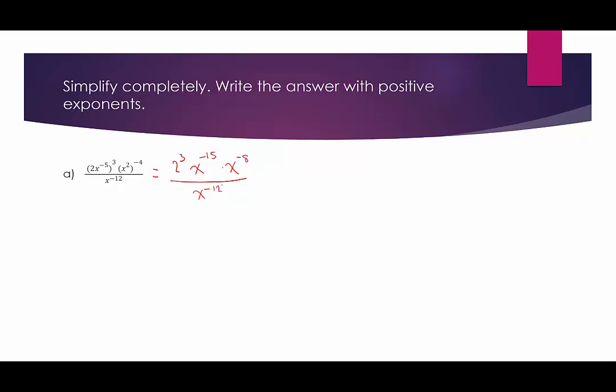From here, my suggestion is: any base that has a negative exponent, switch its location. So if there's a negative exponent in the numerator, it will be positive in the denominator. If there's a negative exponent in the denominator, it will be positive in the numerator. So basically everything switches except for the 2 cubed, which has a positive exponent, so we're going to leave it in the numerator.